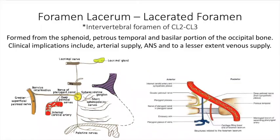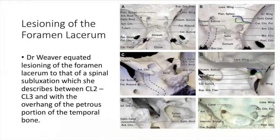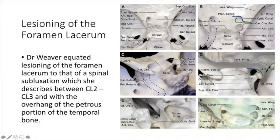The foramen lacerum — or really 'lacerated foramen,' meaning broken foramen — is the intervertebral foramen between what Dr. Weaver refers to as the second and third cranial segments, between occiput and sphenoid. It's formed from the sphenoid, with a roof of the petrous temporal bone as well and the basal portion of the occipital bone. Clinical implications include the arterial supply, autonomic nerve supply, and to a lesser extent venous supply. Dr. Weaver equated lesioning of this foramen to that of a spinal subluxation — a type 1 or type 2 lesion of the spine — between the second and third cranial segments, with an overhang of the petrous portion of the temporal bone. This diagram shows the path of the carotid artery through this bone and the overhang of the petrous bone at the foramen lacerum.